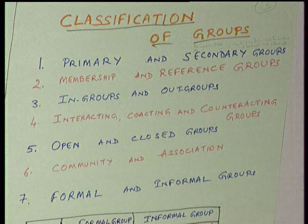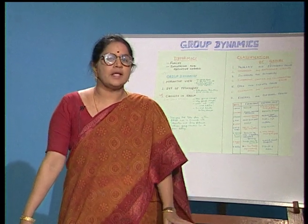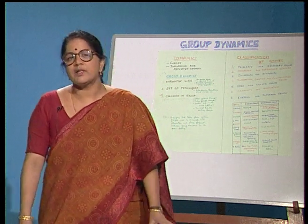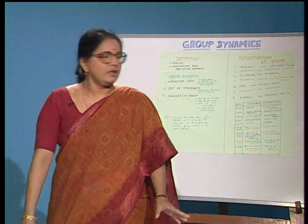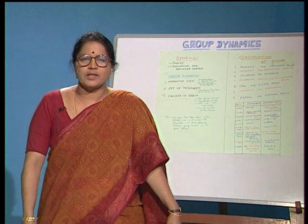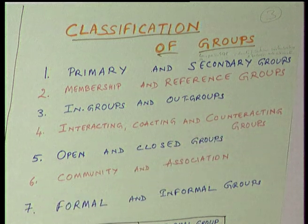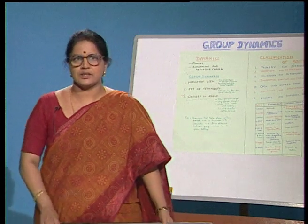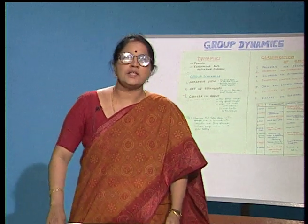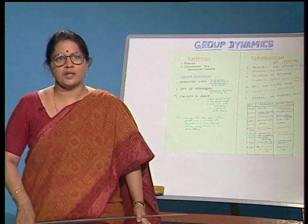The next classification is interacting, co-acting, and counteracting groups. Interacting depends on the sequence of activities — unless the activities of one group are complete, the second group cannot take up its activities, as is prevalent in processing industries. Co-acting means different groups' activities take place simultaneously with no dependence on the previous group. On the other hand, counteracting groups interact with each other to reach a reconciliation, as in the case of union-management relationships, where a reconciliation must be reached for smooth work flow in the organization.